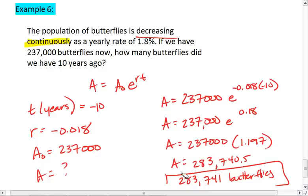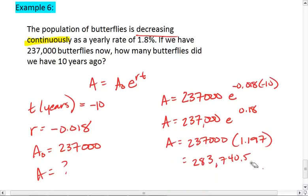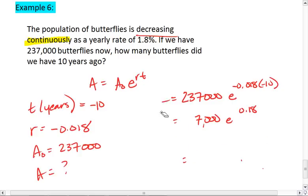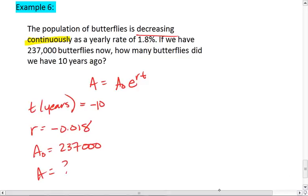Well, that was the first way we could solve. We could also solve using the same general equation of a continuous rate. We have the same rate. However, let's say that that 237,000 is 10 years into the future, and we want to know the initial population.